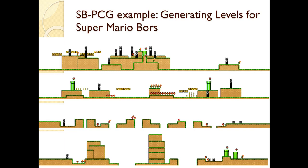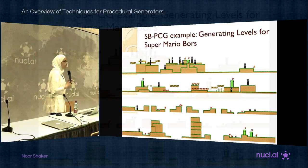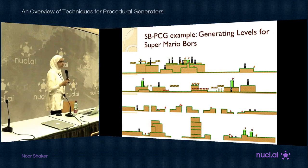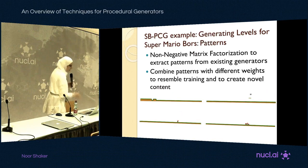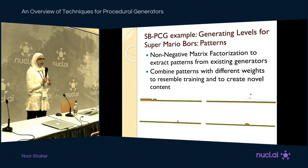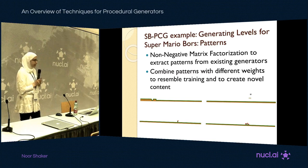Here are some examples of levels evolved using that grammar. The results show a variety of levels — some look human-like, while others look quite different but may be interesting for specific players. This lets you explore a wider range of content, pick from those, and evolve them further.